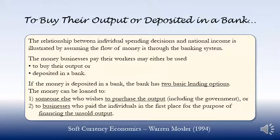The relationship between individual spending decisions and national income is illustrated by assuming the flow of money is through the banking system. The money businesses pay their workers may either be used to buy their output or deposited in a bank.